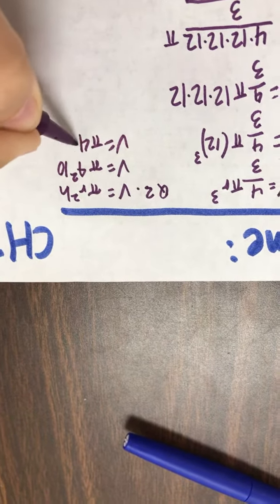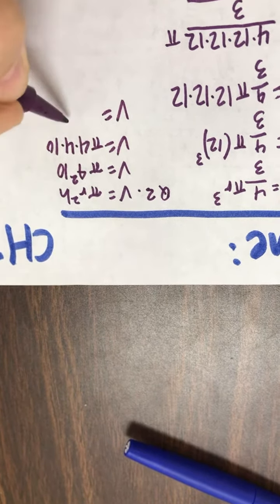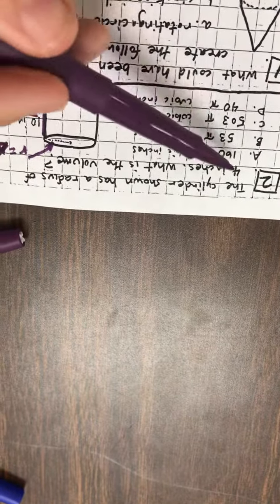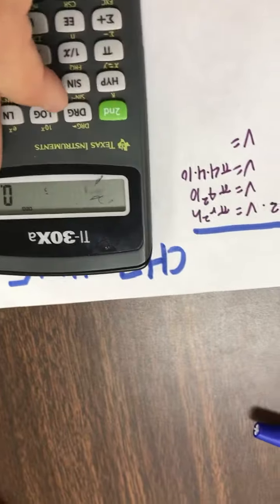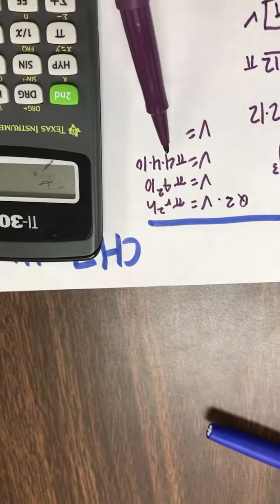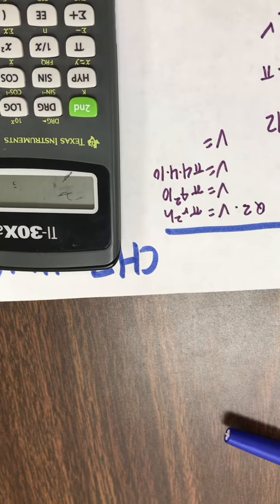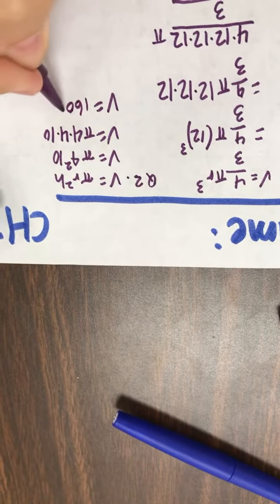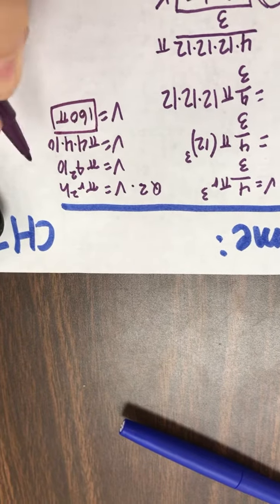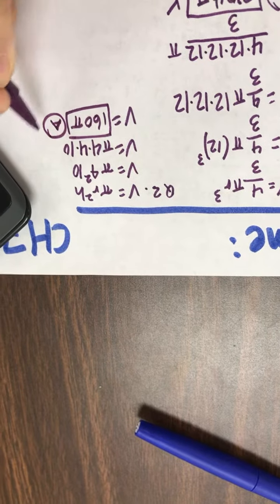So the volume would be 4 times 4 times 10. And it looks like my answer choices here are also in terms of π. So I want to hold off on multiplying by π, just for the sake of this question. So I just want to know what 4 times 4 times 10 is. Great. 160π. When I look at my answer choices, that is selection A. Terrific. I look back here, I notice, yep, selection A. Next.